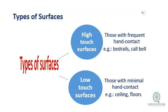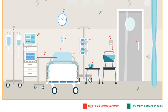What are the types of surfaces? Are all surfaces considered the same? The answer is no. We have two types of surfaces in healthcare facilities: high-touch surfaces and low-touch surfaces. High-touch surfaces are those with frequent hand contact, such as the bed rails of the patient bed. Low-touch surfaces are those with minimal hand contact, such as the ceiling and floors. From the graph, the red arrows indicate high-touch surfaces and green arrows indicate low-touch surfaces. We must prioritize effective and frequent cleaning and disinfection of high-touch surfaces, particularly for Candida auris, to avoid transmission.